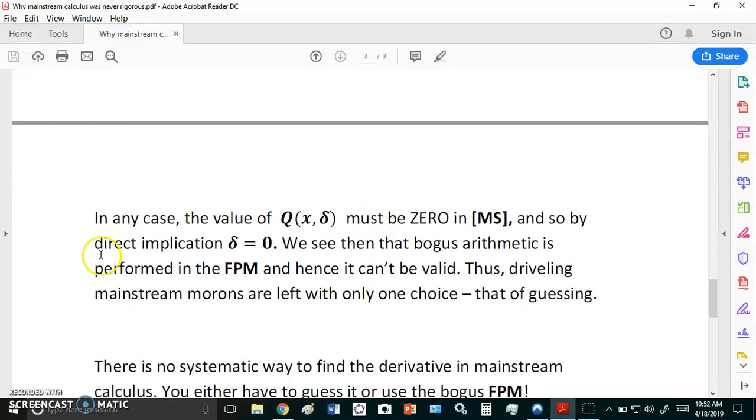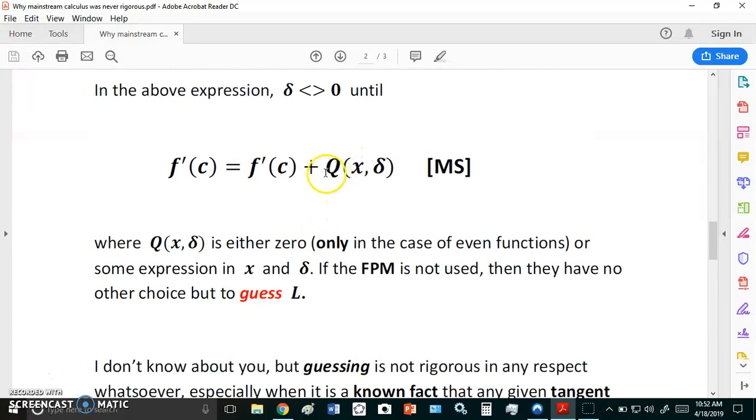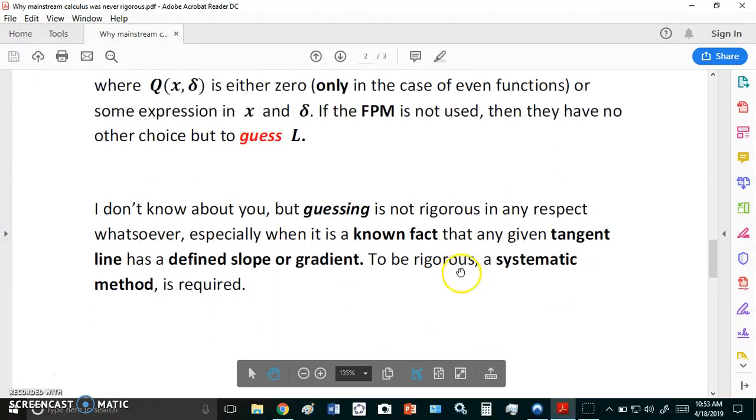In any case, the value of q of x delta must be zero in mainstream calculus regardless of what verification you use. Because when you get to this stage here, you can wave your hands and jump up and down and scream, but yes, you do set delta equal to zero. It is exactly equivalent to you finding f prime of c. There is no way any of you morons in the mainstream can refute that.